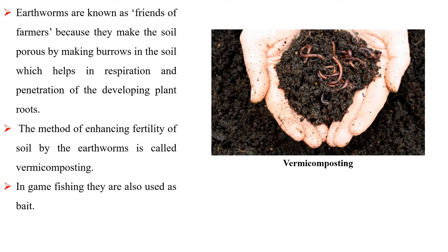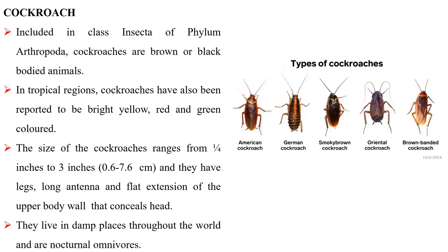Cockroach: Included in class Insecta of Phylum Arthropoda, cockroaches are brown or black bodied animals. In tropical regions, cockroaches have also been reported to be bright yellow, red and green colored. The size of cockroaches ranges from 1¼ inch to 3 inches and they have legs, long antennae and a flat extension of the upper body wall that conceals the head. They live in damp places throughout the world and are nocturnal omnivores.